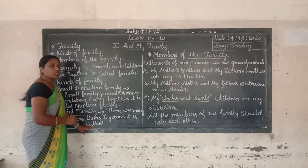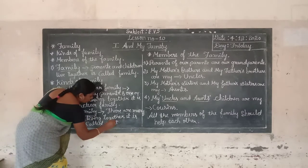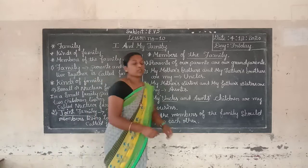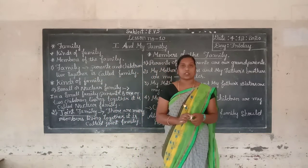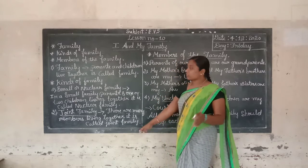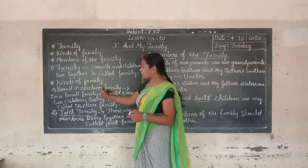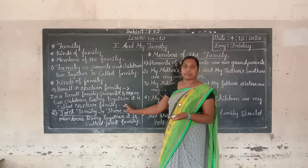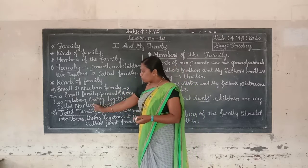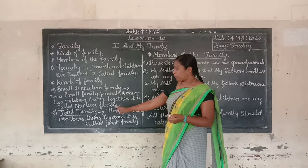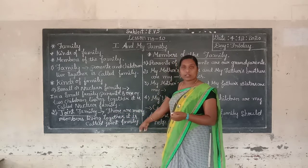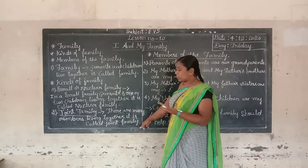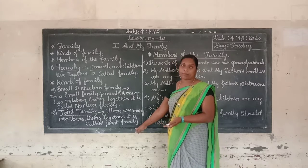So it is called a joint family. Students, nowadays we find joint families only in villages. So there are two kinds of family: small family or nuclear family, where parents and one or two children live together; and joint family, where many members including grandparents, parents, cousins, and children live together.